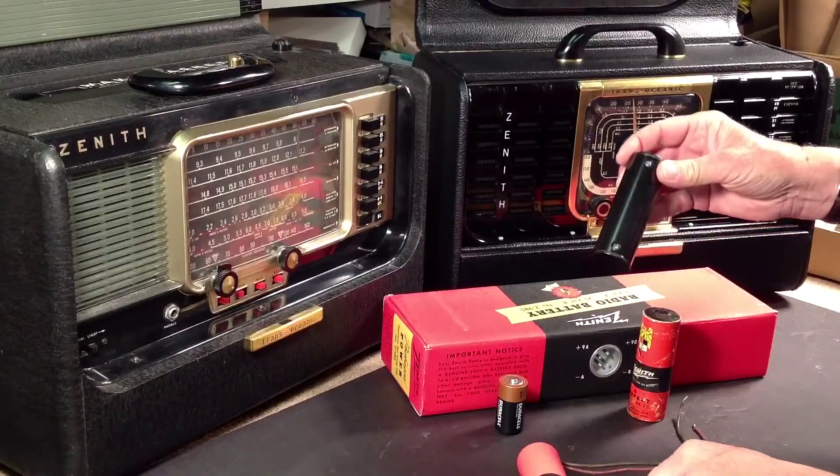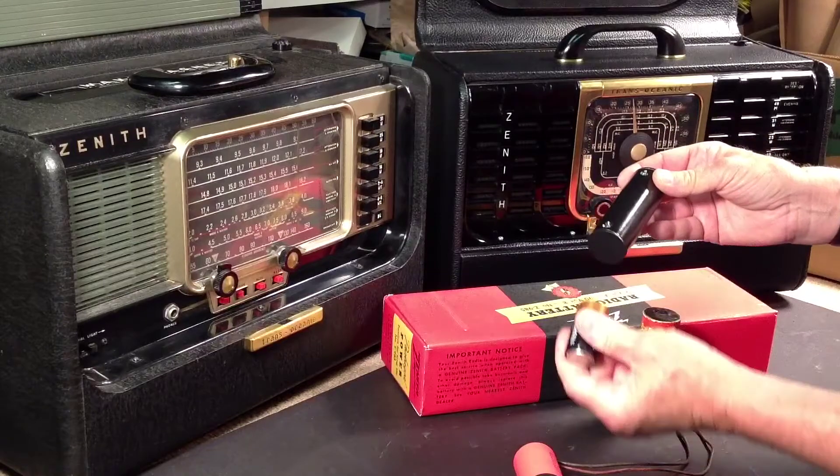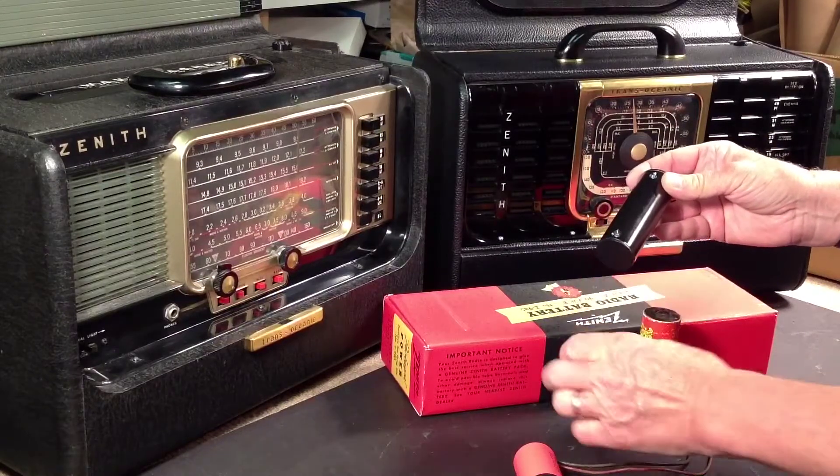This video will show you how to make a Z1 battery using a length of PVC pipe, a couple connectors from Radio Shack, and a C-cell.